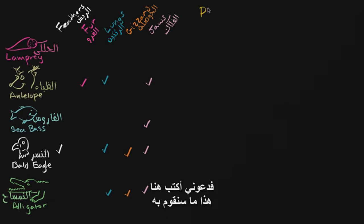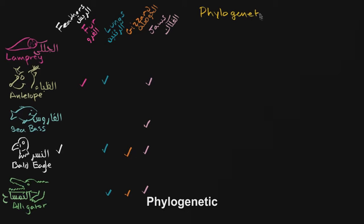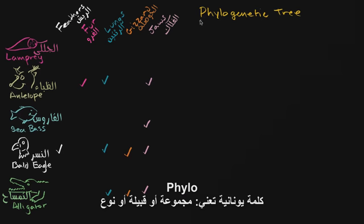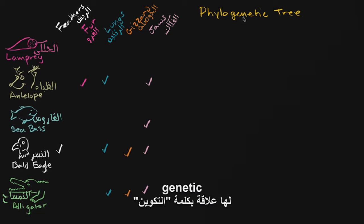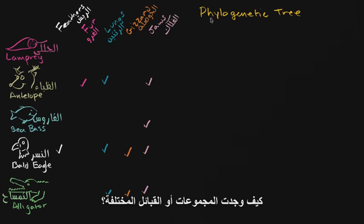So let me write this down — that's what we're going to create: a phylogenetic tree. "Phylo" comes from the Greek for group, kind, or tribe, and "genetic" comes related to the word genesis — how do these things come about? How do the different groups, or in this case, the different species come about?